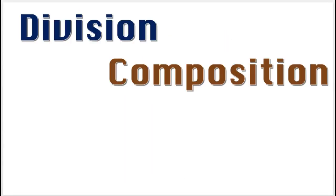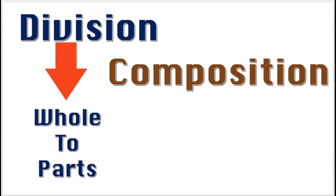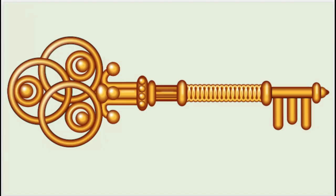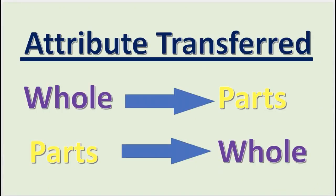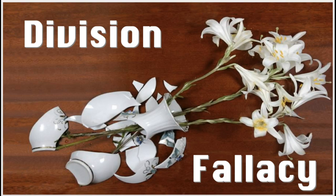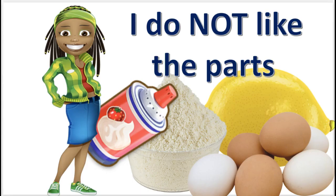To distinguish the division fallacy from the composition fallacy, remember that division goes from the whole to parts — it's divided. And the composition fallacy goes from the parts to the whole — it's composed. Also, here's a key thing to remember: if an attribute is transferred from the whole to the parts, or vice versa, and it's done correctly, then it's not fallacious. For the fallacy to occur, the transfer must be improper, like this one.